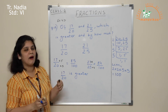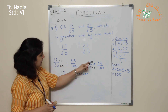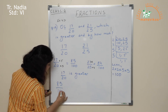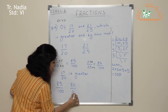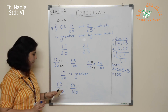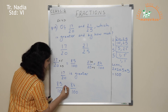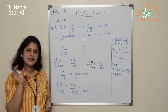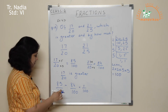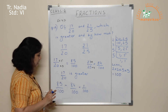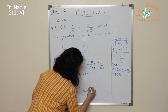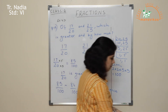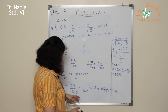Now they also want to know by how much. We find the difference by subtracting the smaller from the larger: 85 upon 100 minus 84 upon 100. 85 minus 84 is 1, so the difference is 1 upon 100. When finding difference, we always subtract the two fractions. So 1 upon 100 is the difference.